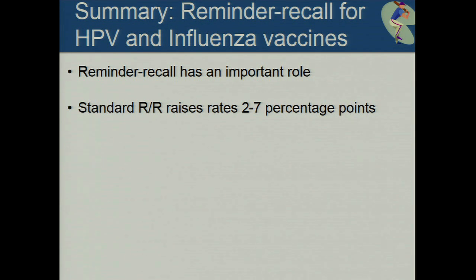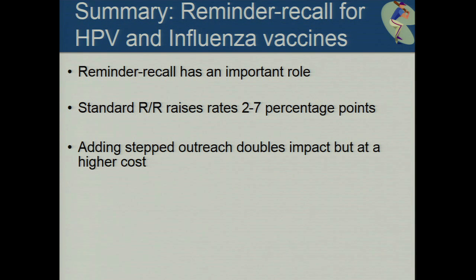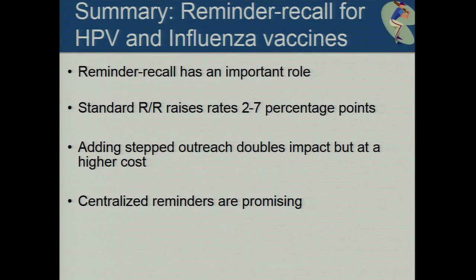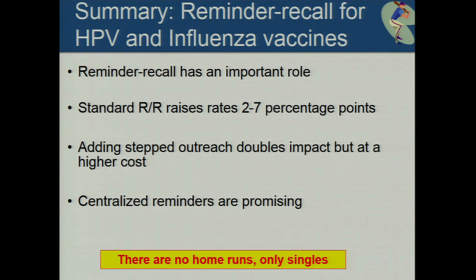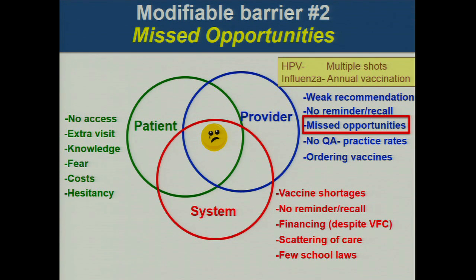Summary of reminder recall: it has an important role and can raise immunization rates a small amount; adding outreach at least doubles the impact but at higher cost; centralized reminders might be promising. I've been using this term more and more: there are no home runs in the immunization delivery world, only singles. There's not going to be a magic formula to bump immunization rates super high.